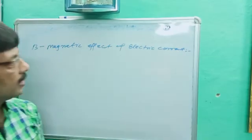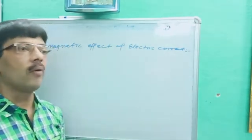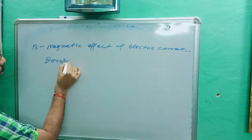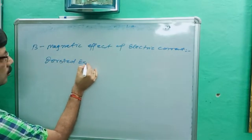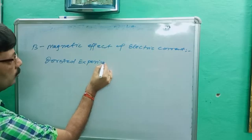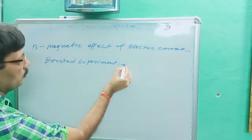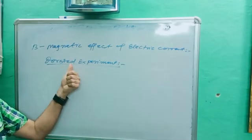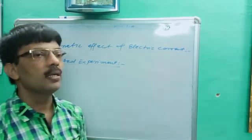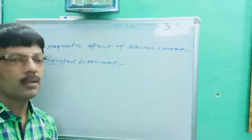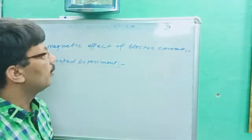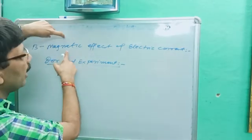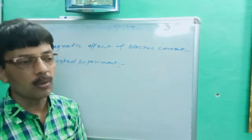For introduction, we will directly take a question, and this is called the Oersted experiment — O-E-R-S-T-E-D. He confirmed the experiment about the relation between magnetism and electric current, which is the basis of electromagnetism.